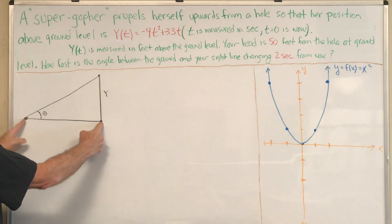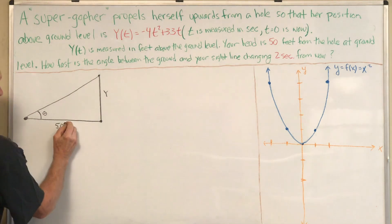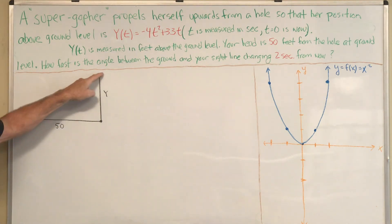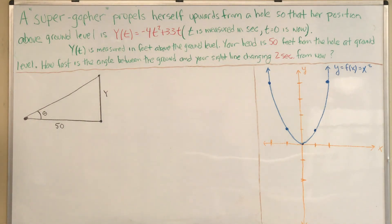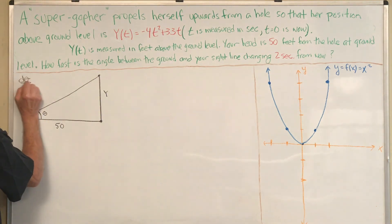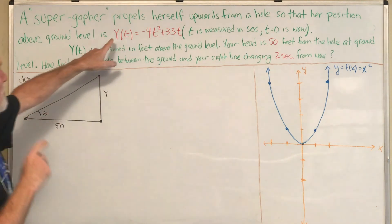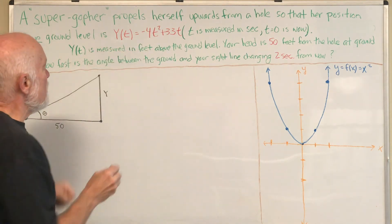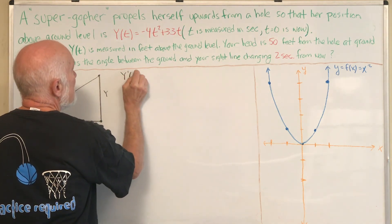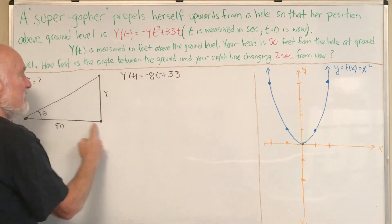The horizontal distance is not changing — it's 50 feet, given in the problem. The hypotenuse is also changing but doesn't seem relevant right now, so why add another variable if we don't need it? We're trying to find d theta/dt. We have a position equation, so if we take its derivative we know how fast y is changing.